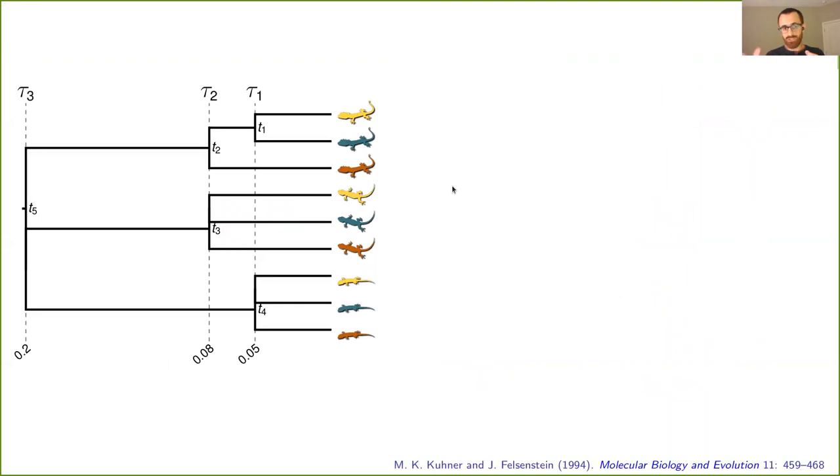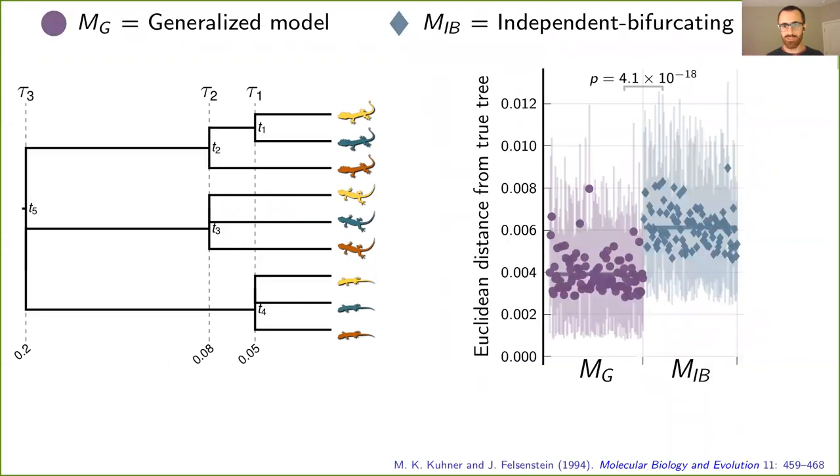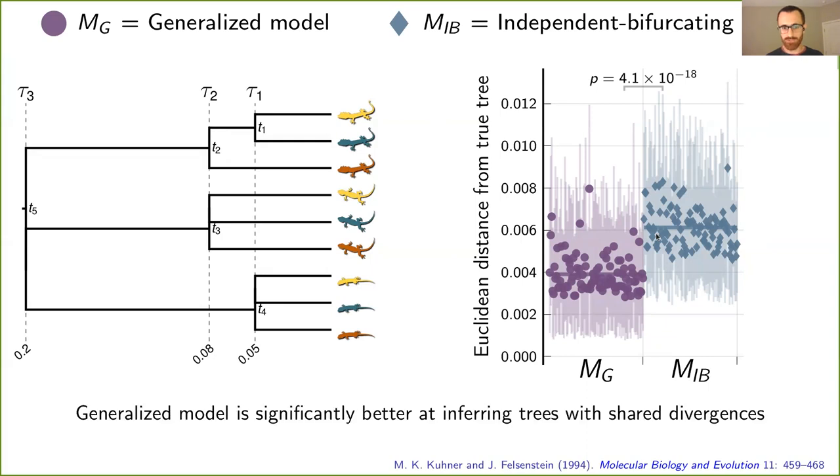Let's look at these same data sets. So I'm just moving the same tree over to the left and just look at the distance from the true tree. And this is just showing us that our new approach is significantly closer to the true tree than assuming independent bifurcating divergences. So when there are shared divergences, the new approach seems to be working well and doing significantly better than the current standard of assuming independent bifurcating divergences.